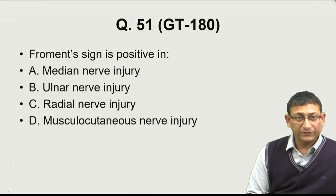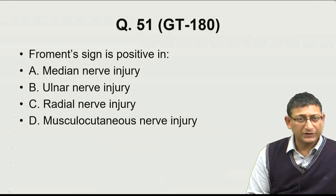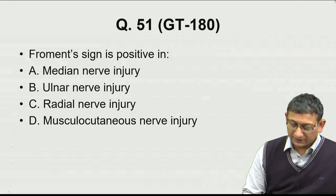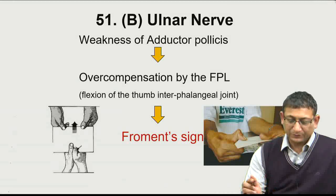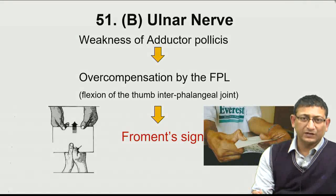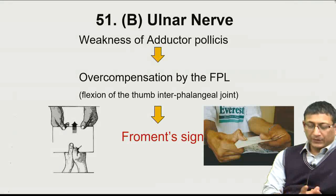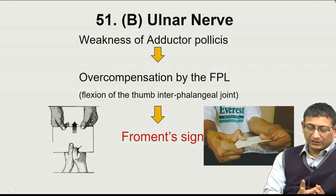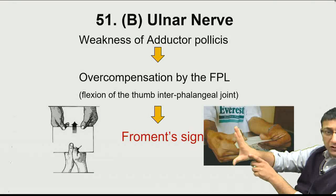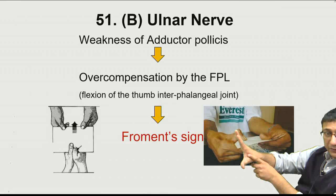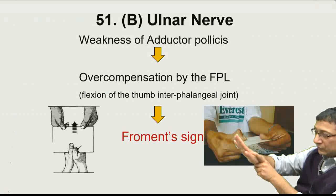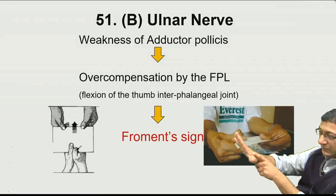Question number 51: Froment's sign is positive in — basically this test checks for paralysis of the adductor pollicis, the muscle in the first web space of the hand that is responsible for adduction of the thumb.